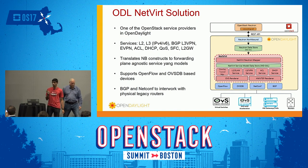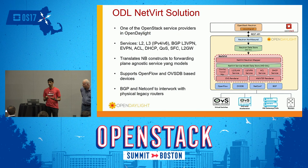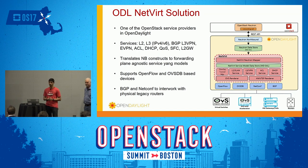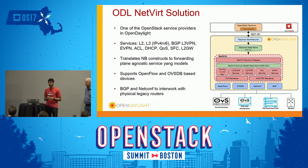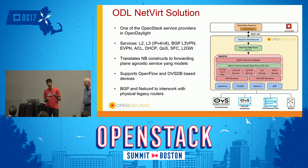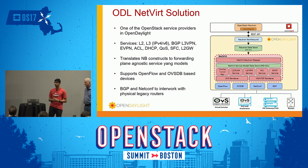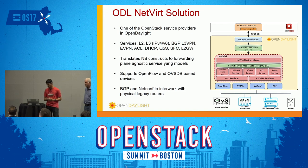There are two implementations in OpenDaylight providing the same OpenStack provider functionality. Looking at the OpenDaylight Netvirt implementation, the key features include a wide variety of services like Layer 2, Layer 3, and also advanced services like L3, BGP VPN, EVPN, Service Function Chaining, and IPv6. Some of them are also tied to gateway functionality to connect to bare metal appliances.